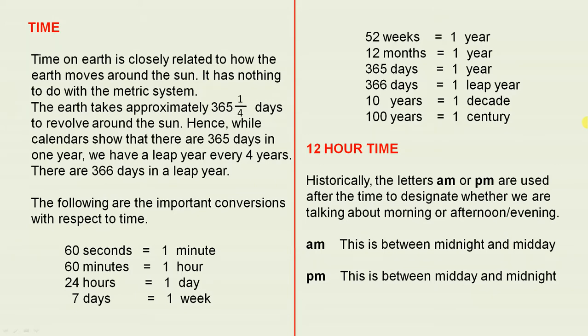Let's look at 12 hour time. Historically, the letters AM or PM are used after the time to designate whether we are talking about morning or afternoon/evening. AM is between midnight and midday. PM is between midday and midnight.